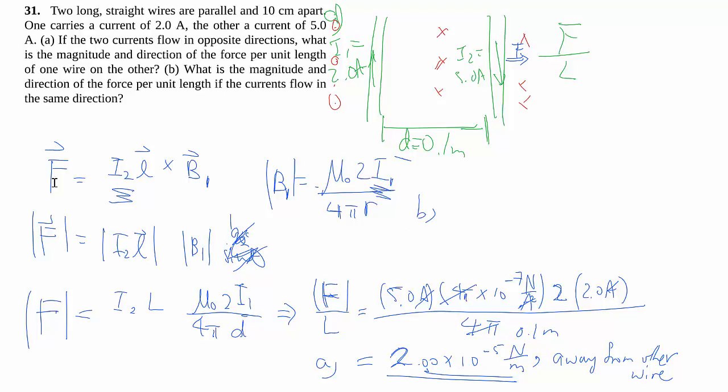For Part B, instead of flowing in the opposite direction, they flow in the same direction. So everything works the same way except that the direction is reversed. You know the magnitude is exactly the same, and instead of away, you have towards the other wire.